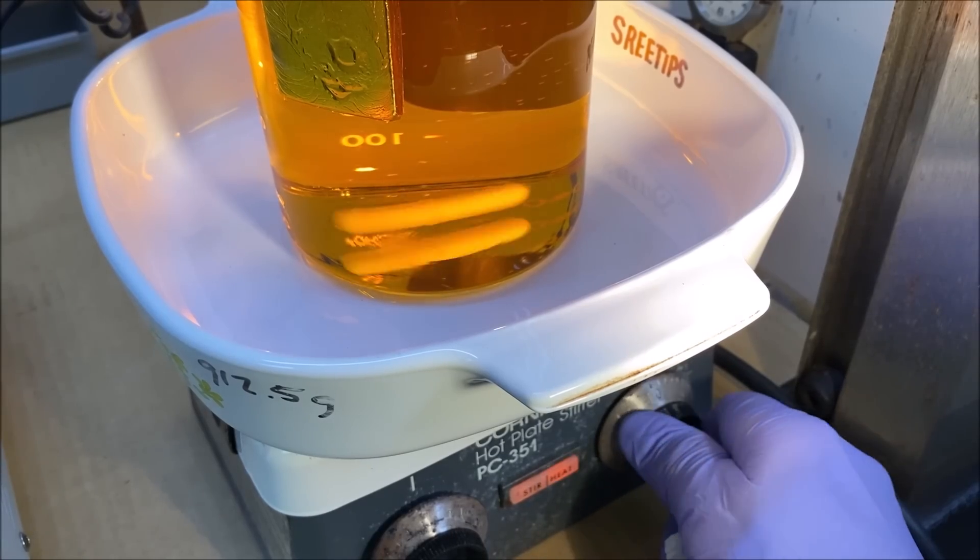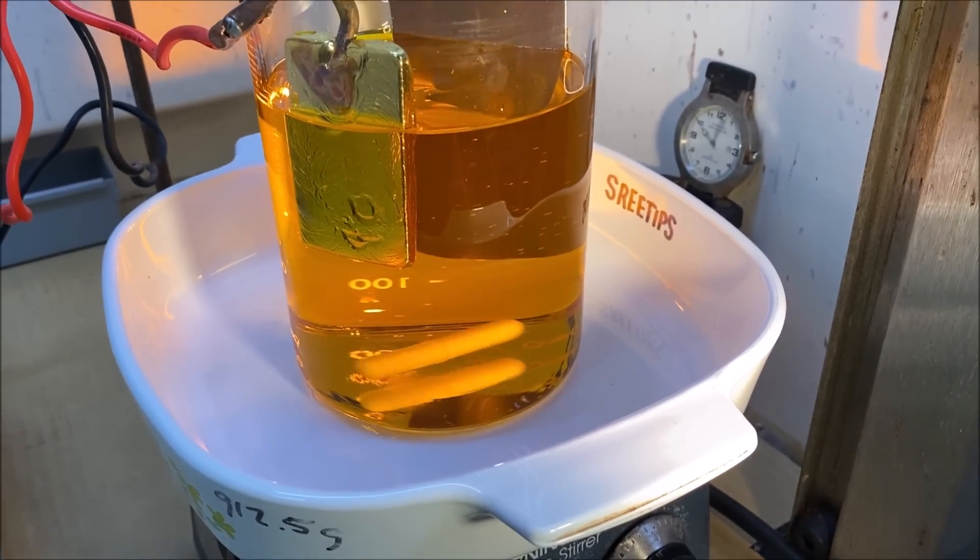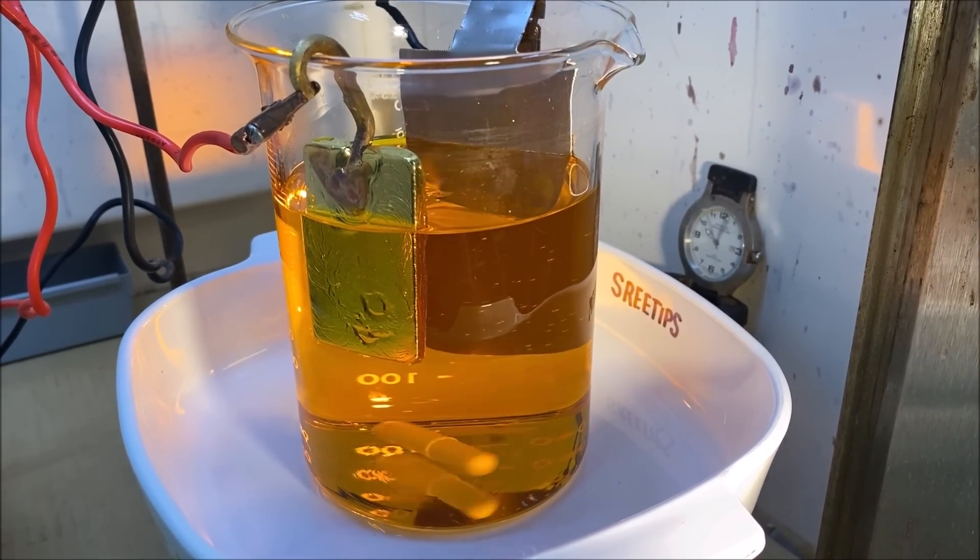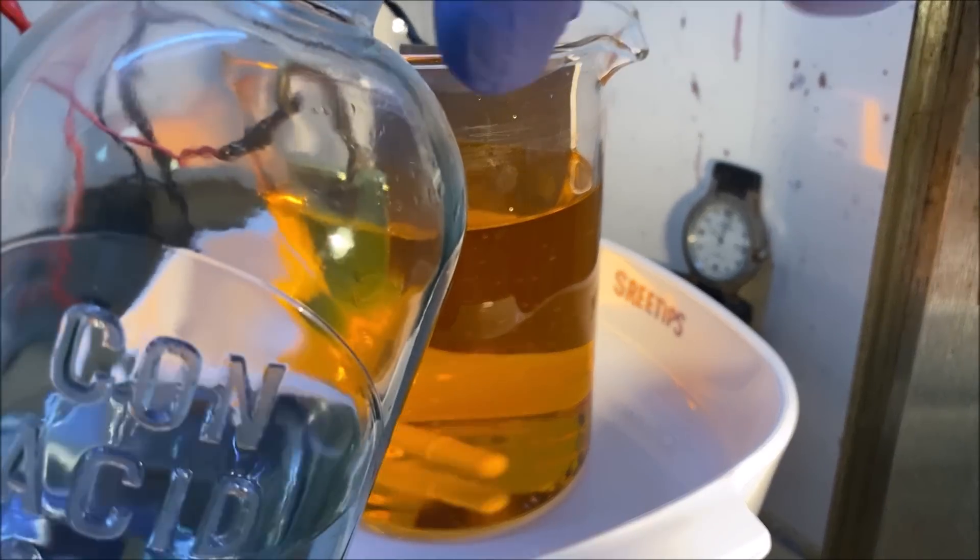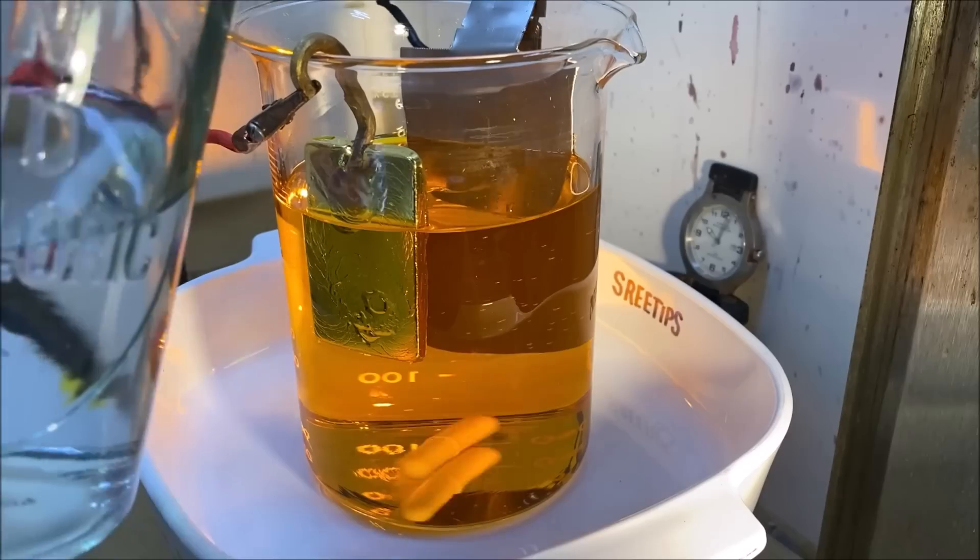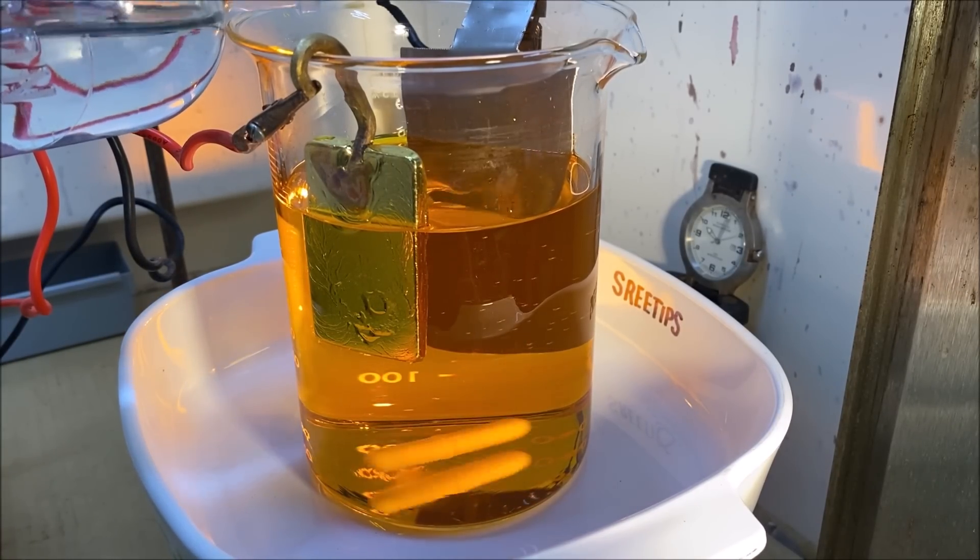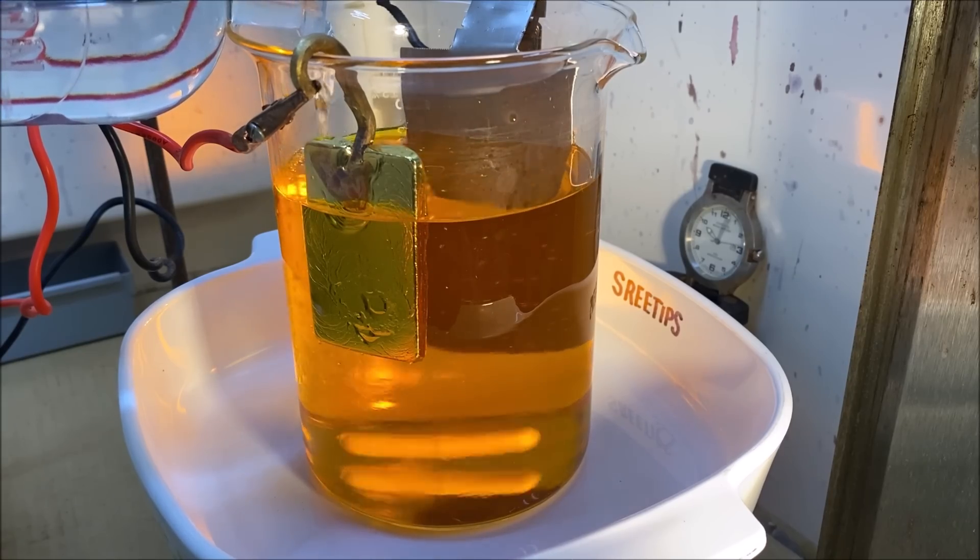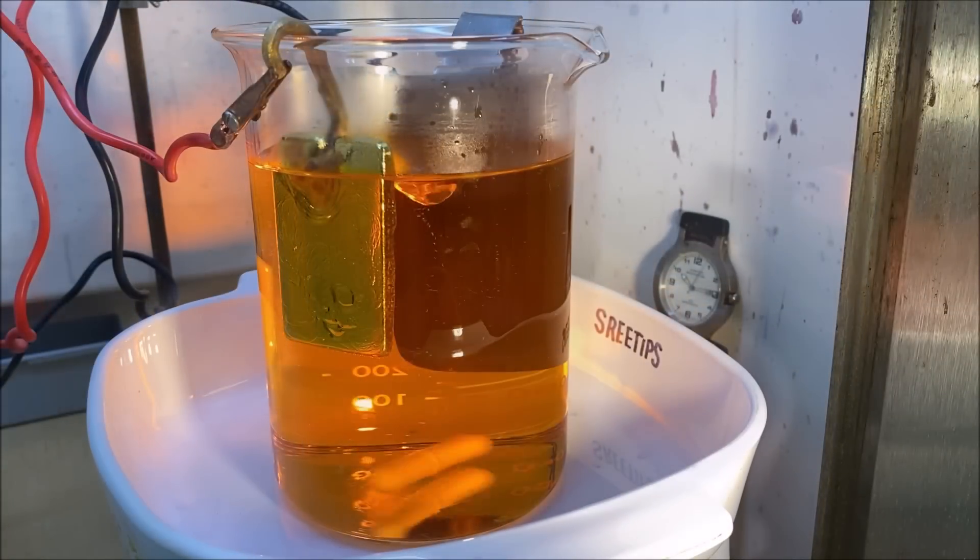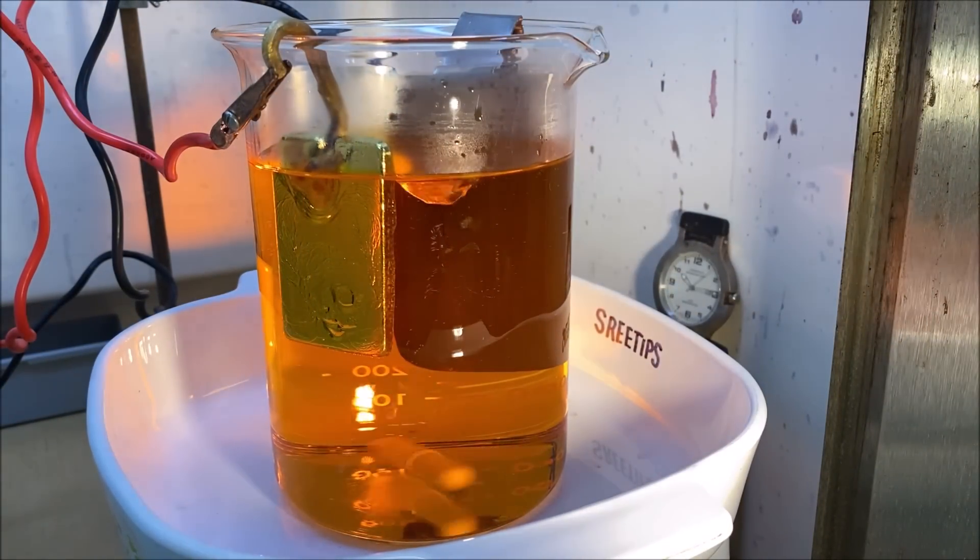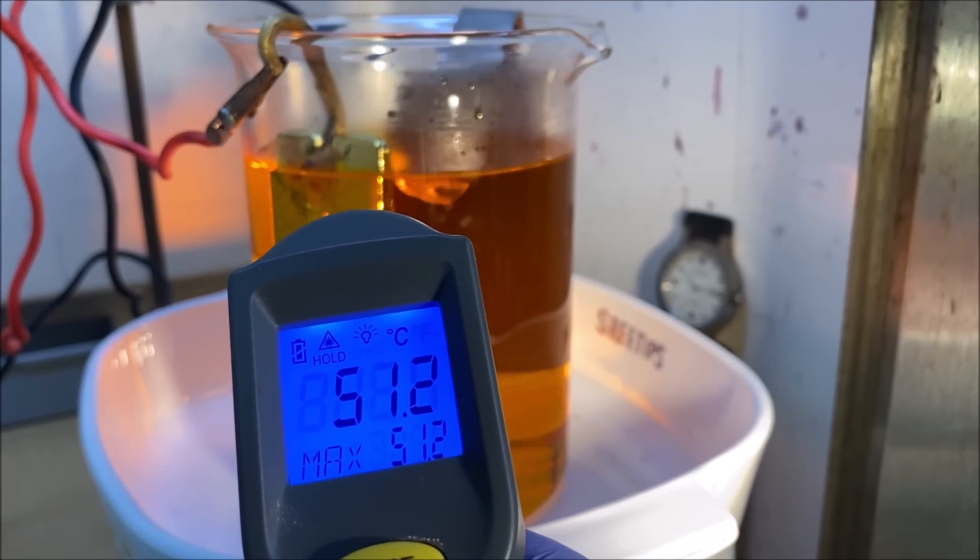I'm going to add some low heat to start heating the solution up. We want to try to get it up to 140 degrees Fahrenheit or 60 degrees Celsius. Now I'm adding about 100 milliliters of hydrochloric acid because that's what the recipe called for. Let's check the temperature: we've got 124 Fahrenheit and 51.2 Celsius, so we're almost there.